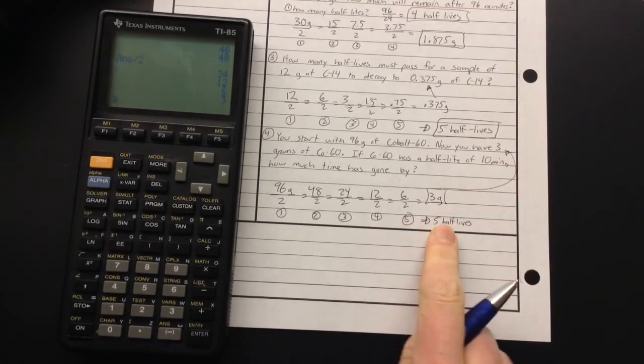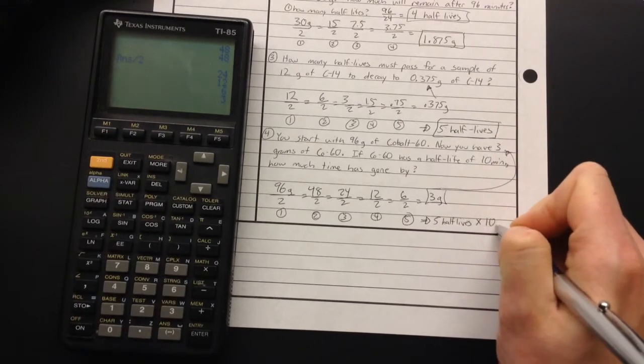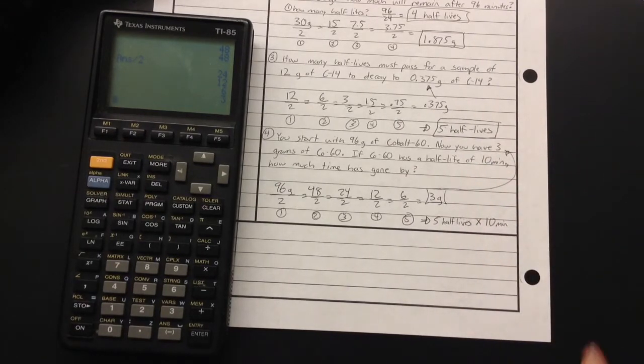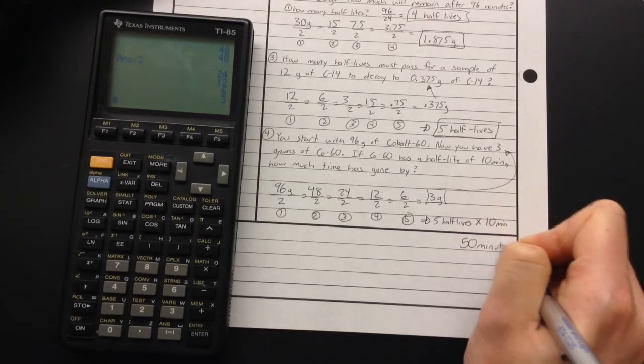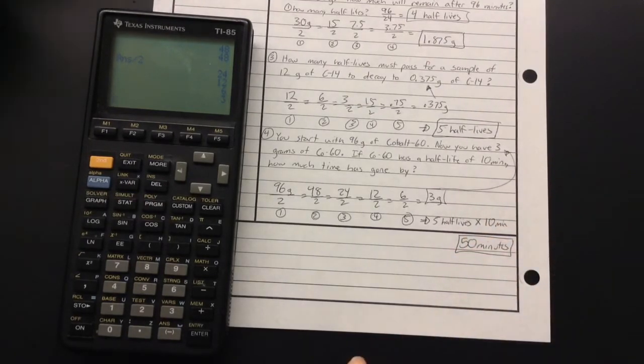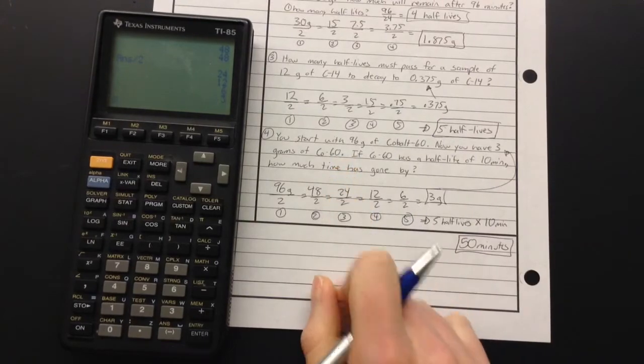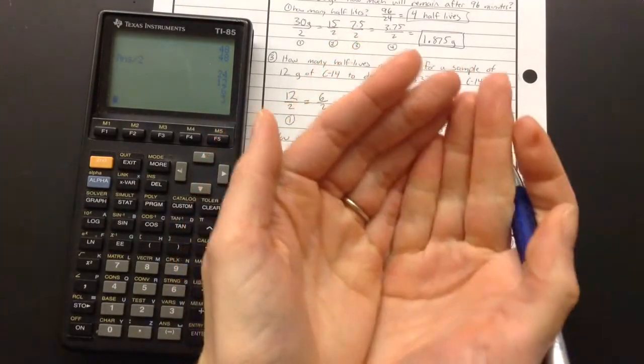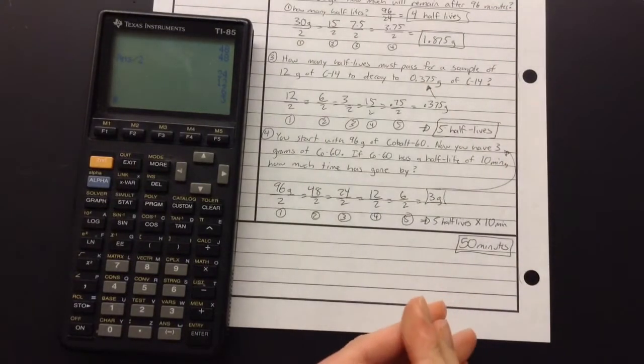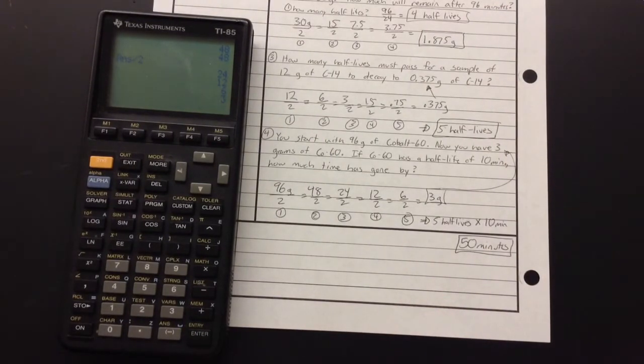Now each half-life is 10 minutes. So 50 minutes. I ran out of room there. 50 minutes went by while that cobalt-60 turned from 96 grams of cobalt-60 to 3 grams of cobalt-60. Now if I had that in my hand, I'd have 93 grams of whatever cobalt-60 turns into in addition to my 3 grams of cobalt-60. But I could measure that.